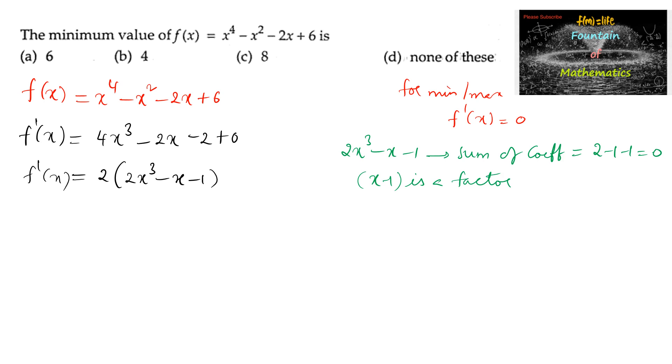And to find the other factors let us use the synthetic division method by taking the coefficients of this polynomial. So 2x power 3 plus 0x squared minus x minus 1. So the coefficients can be taken here: 2, 0, negative 1, and negative 1.